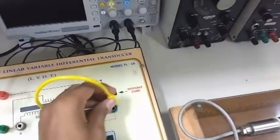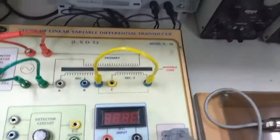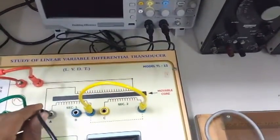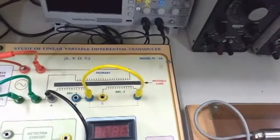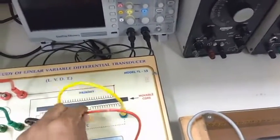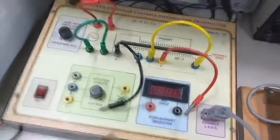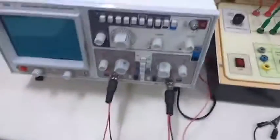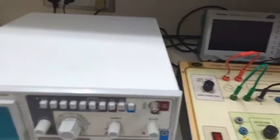And this A and C port is used for the AC output. Now you can use this CRO for the output, so connect one port of CRO for AC output.